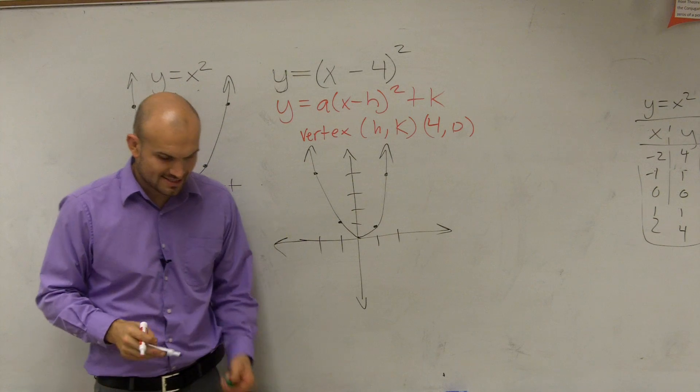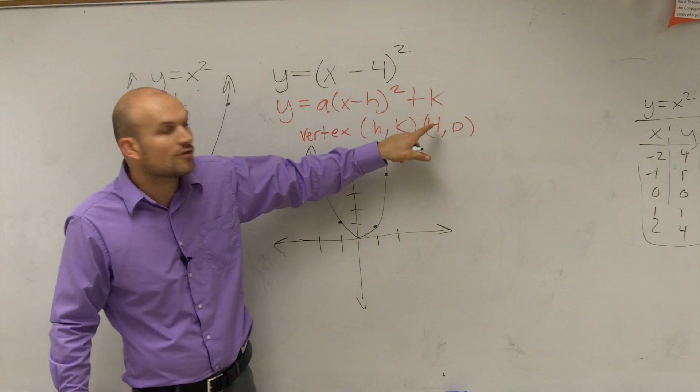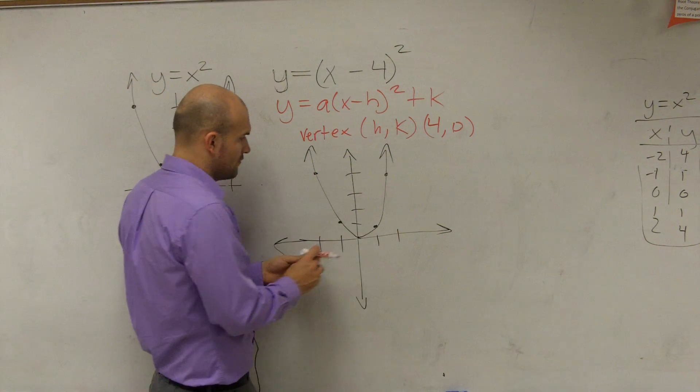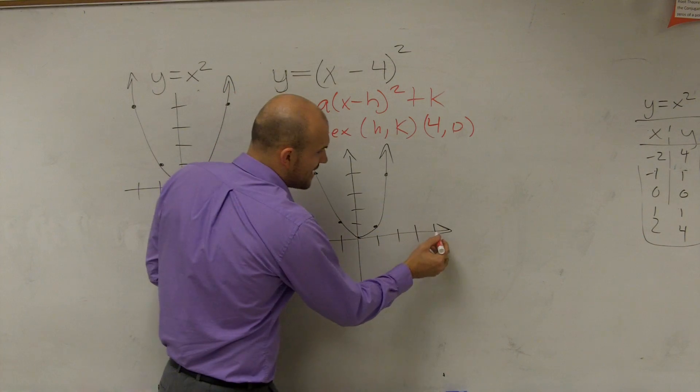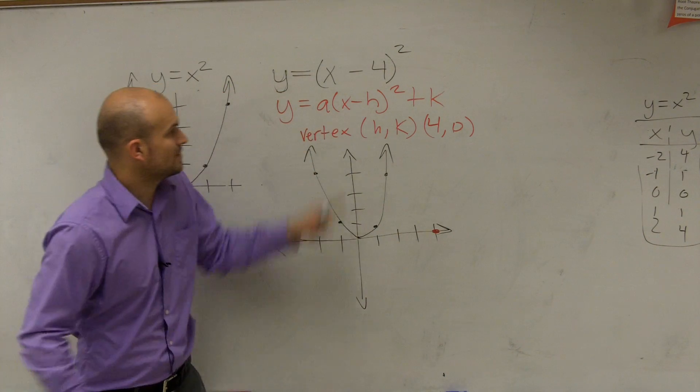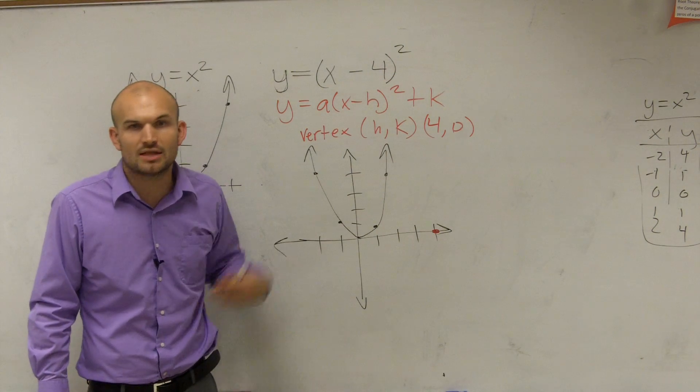Now, I said I have a new vertex, right? My new vertex is 4 comma 0. So 4 comma 0 is over at 1, 2, 3, 4. So now that's my new vertex. So when I say x minus 4, where am I shifting my graph? To the right or to the left?